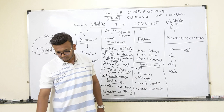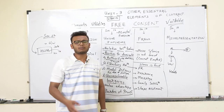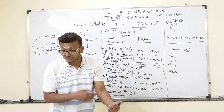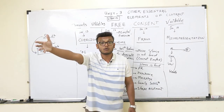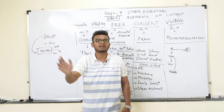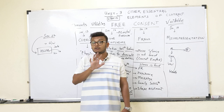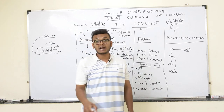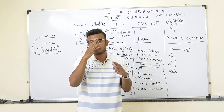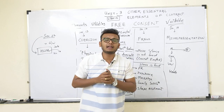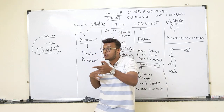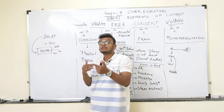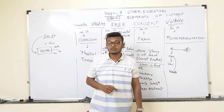Next point: agreement in restraint of legal proceedings. A party cannot be absolutely restricted from enforcing their legal rights — you cannot interfere in the court system. However, the exception is arbitration. Two parties can agree to go to an arbitrator instead of court, or settle by mutual consideration — this is apart from the court system and is an exception to restraint of legal proceedings.